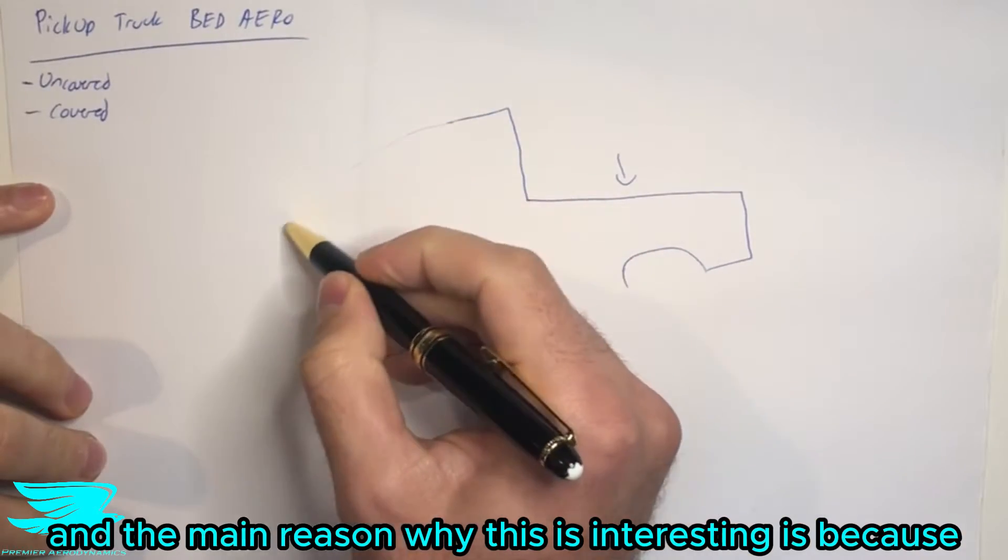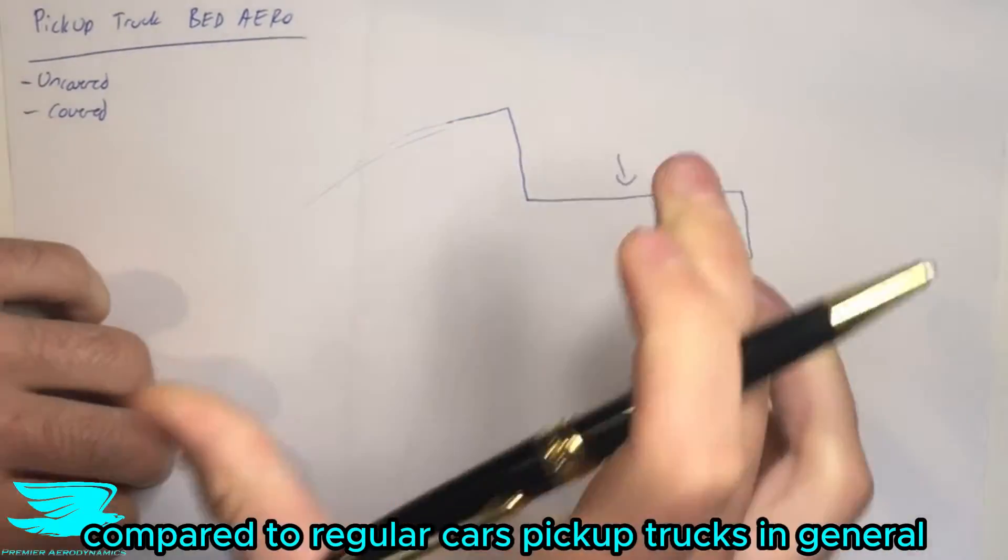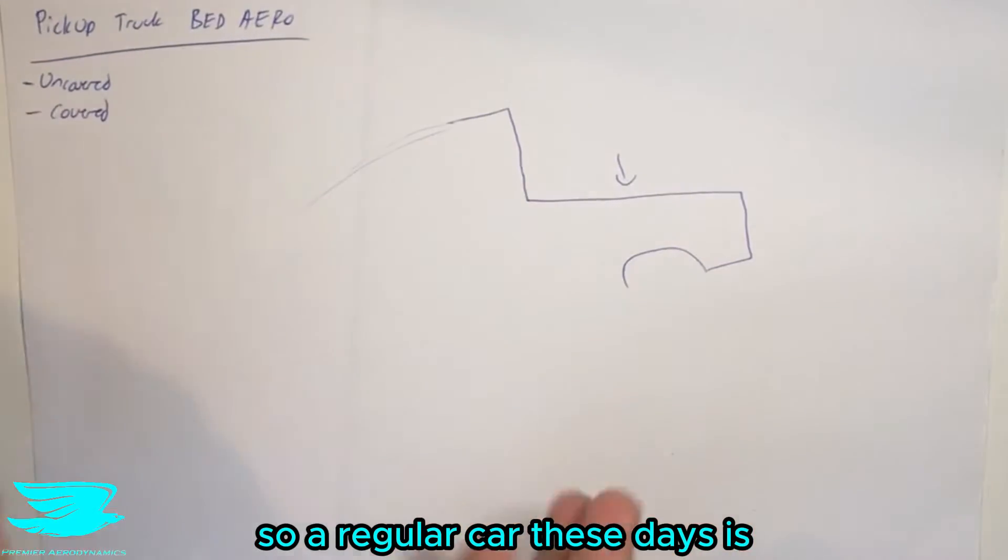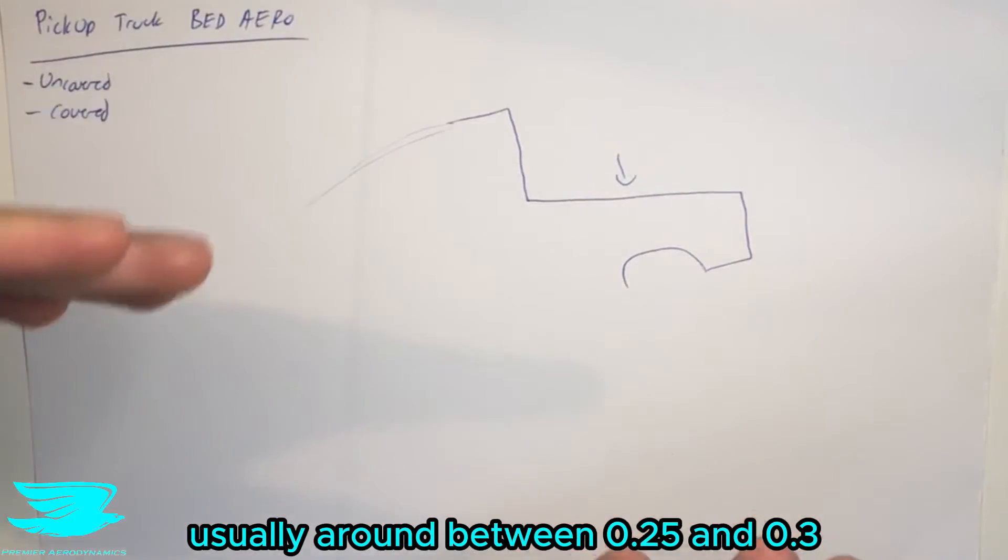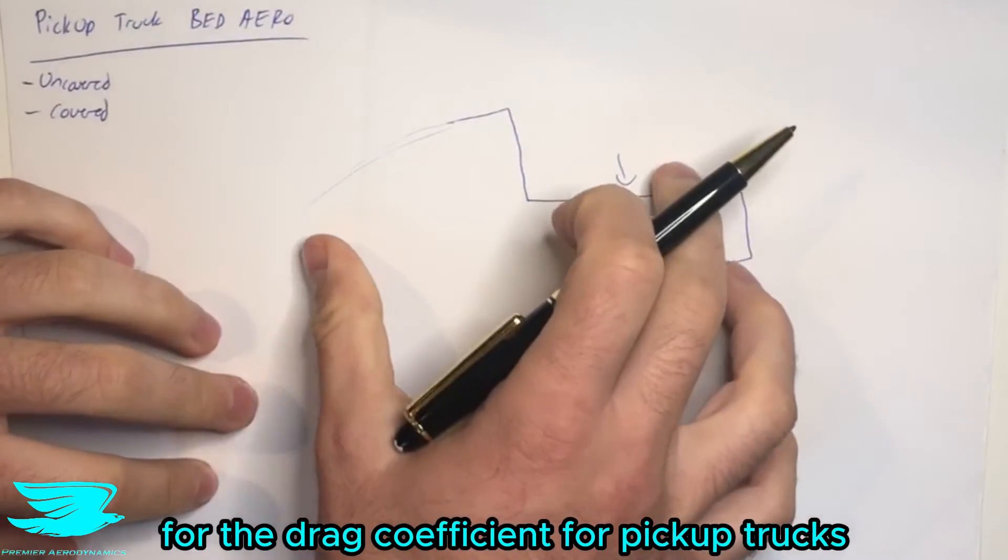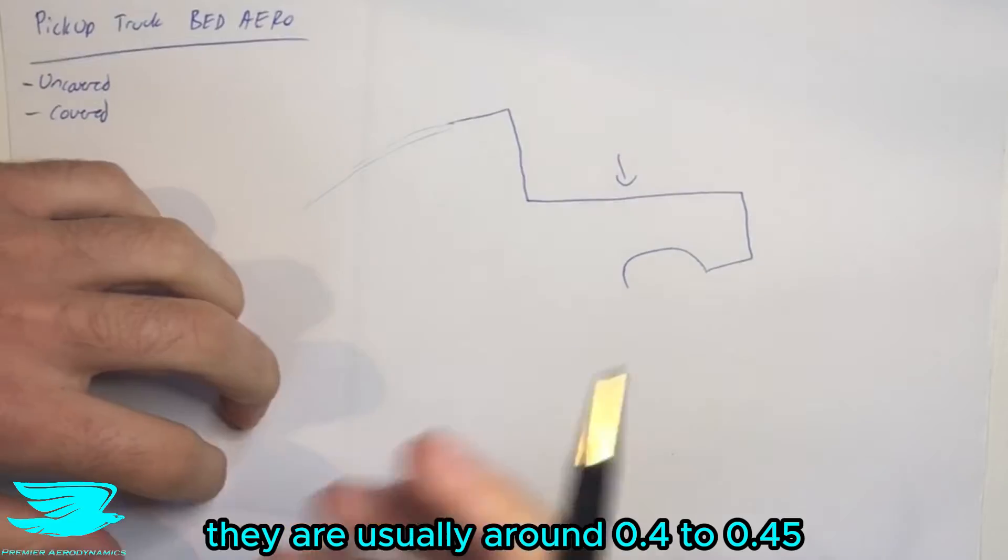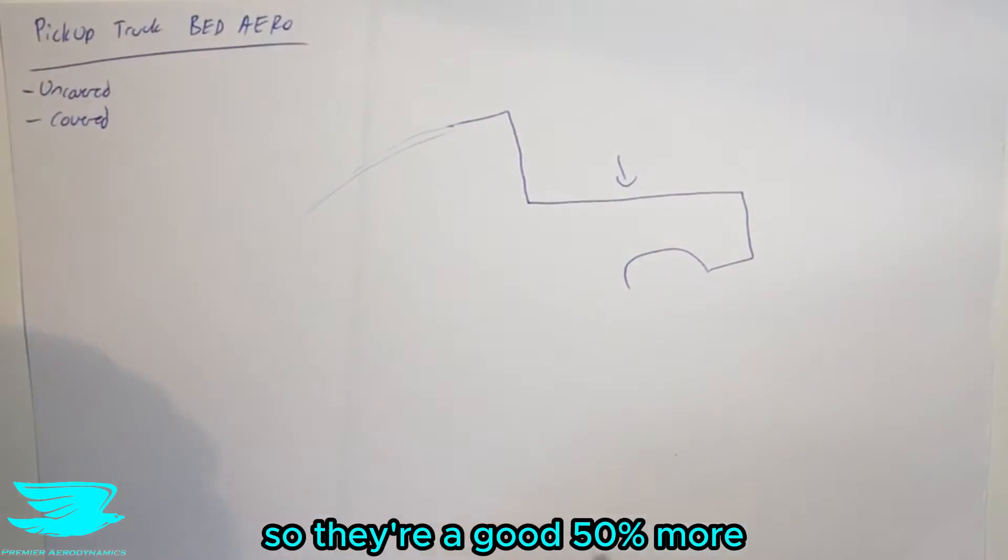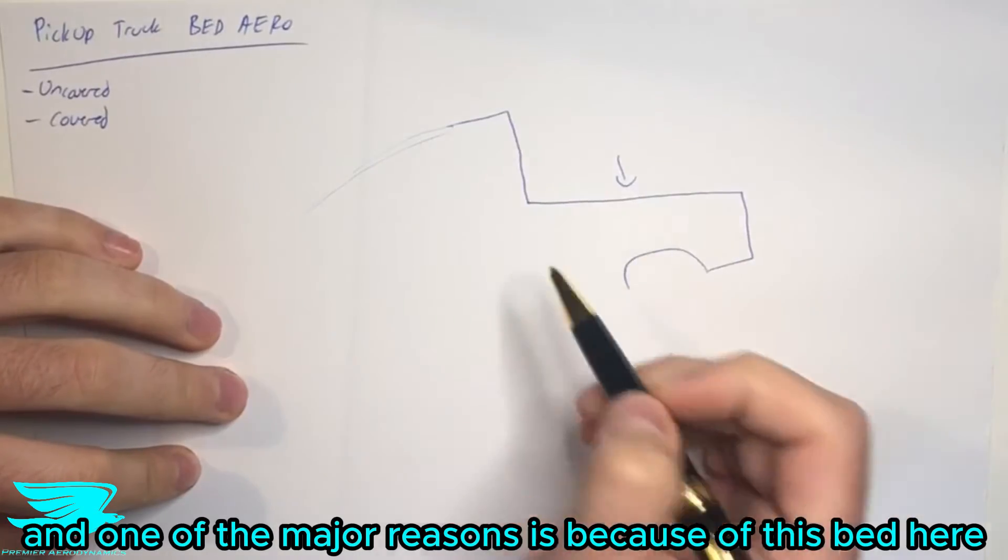And the main reason why this is so interesting is because compared to regular cars, pickup trucks in general have a very high drag coefficient. So a regular car these days is usually around between 0.25 and 0.3 for the drag coefficient. For pickup trucks, they're usually around 0.4 to 0.45, so they're a good 50% more. And one of the major reasons is because of this bed here.